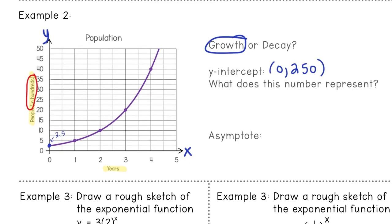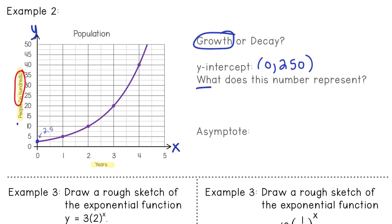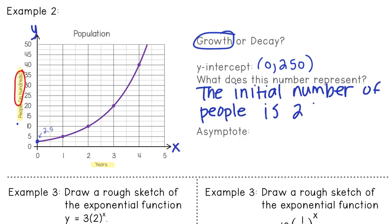What does this number represent? So like we said, it's the y-value, so we have to look at the y-axis and it's people. And y-intercept is always the initial amount. So whatever town this is, is the initial amount of people that live there or the initial number of people is 250. So when they decided to make this town, 250 people live there.